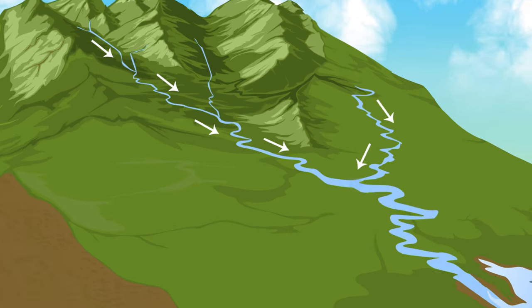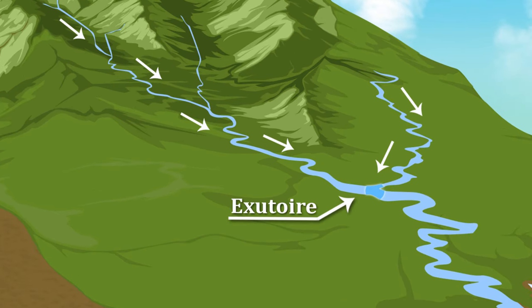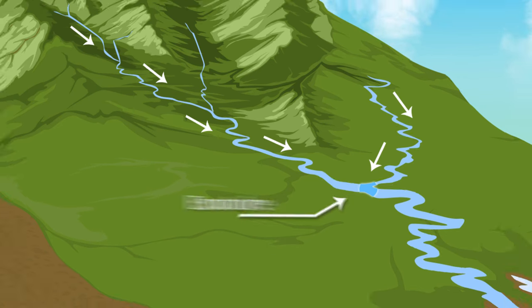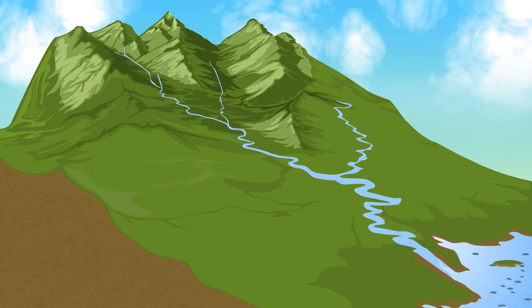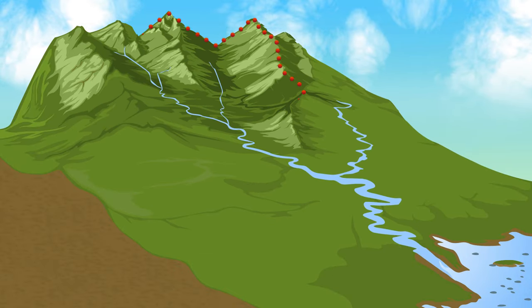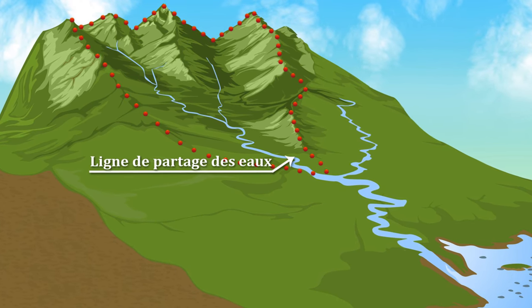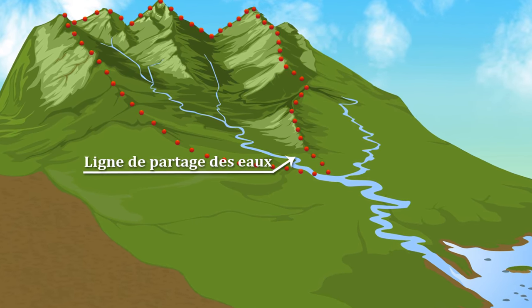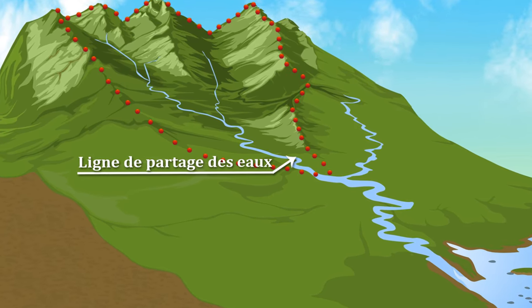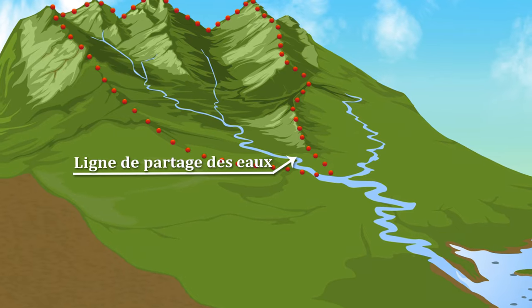On nomme ce point de plus basse altitude l'exutoire, et il correspond à l'embouchure du cours d'eau principal. Un bassin versant est toujours délimité par une frontière naturelle, la ligne de partage des eaux, qui consiste en une suite de points qui forment une crête suivant l'altitude et le relief du terrain.